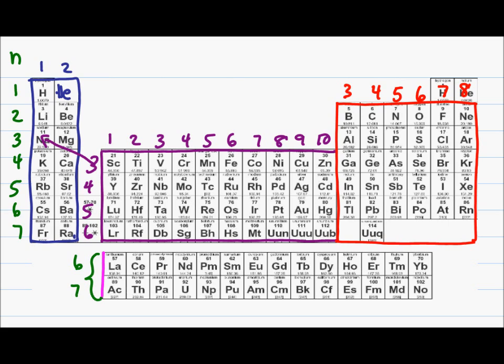And finally, we have our F orbitals down here, which composes your lanthanide and actinide series. And as we said before, these rarely show up in organic chemistry. Recall however, that your F orbital has a total of seven sub-orbitals for a total of 14 electrons.